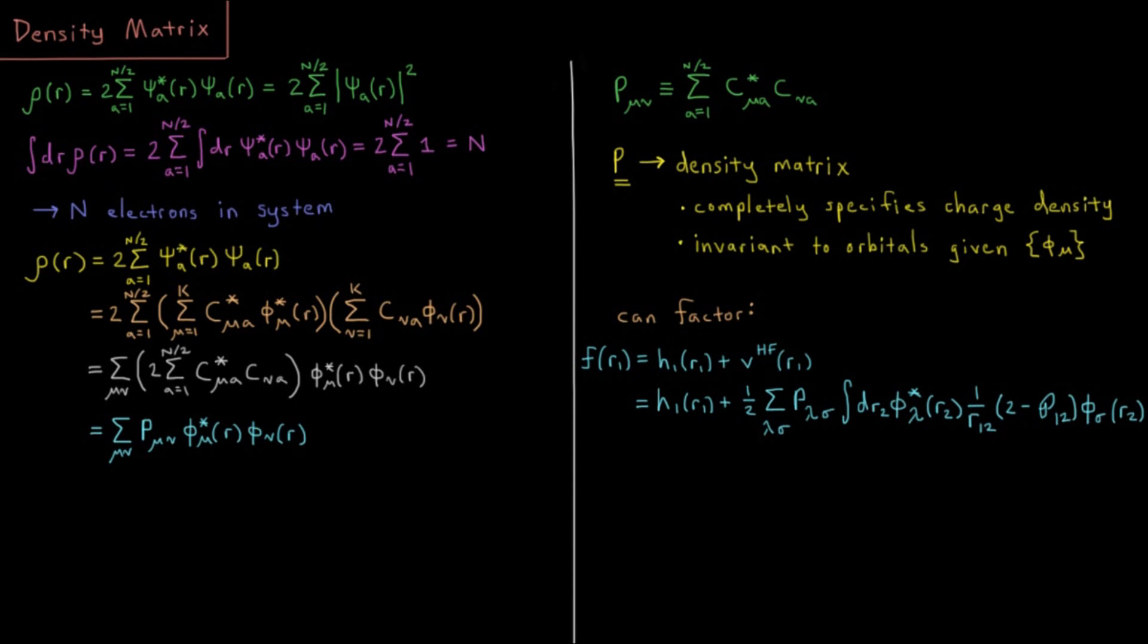This video will introduce the density matrix in Hartree-Fock theory. In the previous video, we discussed the Hartree-Fock roothaan equations where we can express all of the spatial orbitals in restricted Hartree-Fock as a linear combination of atomic orbital basis sets.